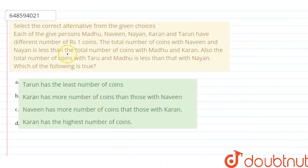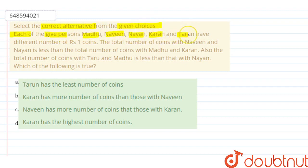Hello, so the question is: select the correct alternative from the given choices. We have five persons — Madhu, Naveen, Nayan, Karan and Tarun — who have different numbers of 1-rupee coins.